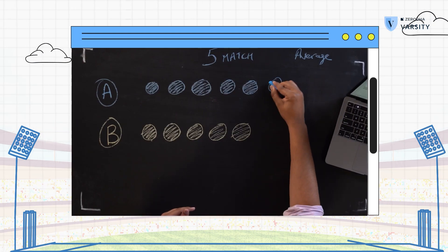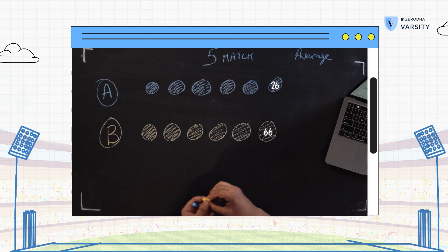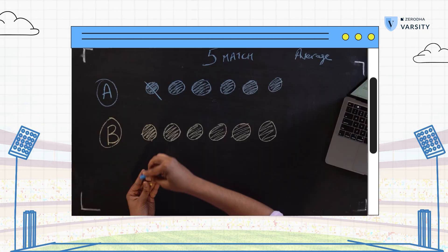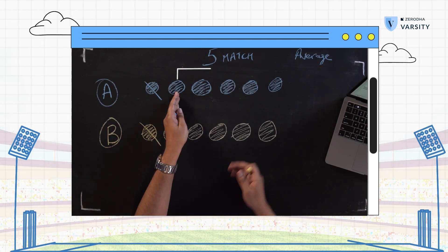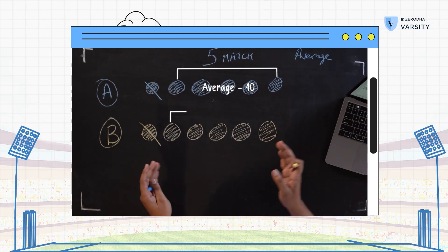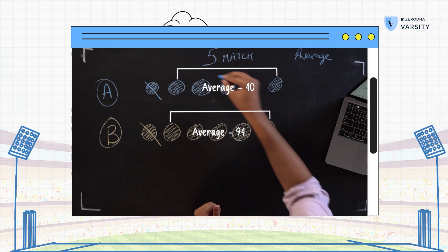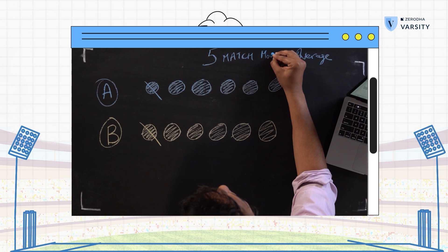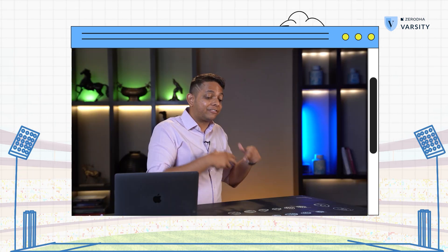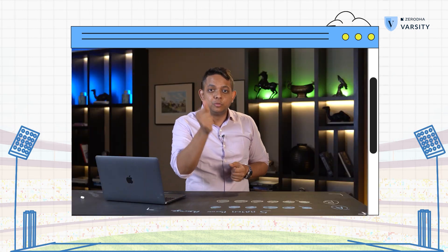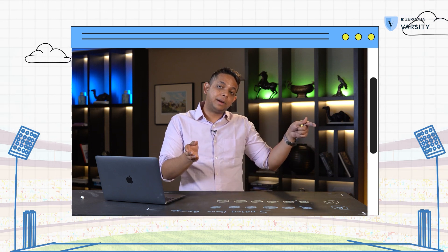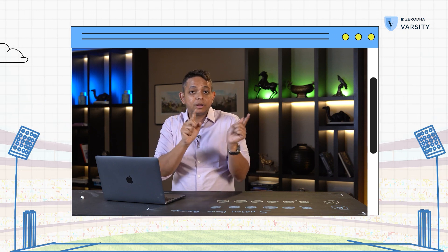What if we have a sixth match? Since we're only doing five matches, instead of seeing the first five, we will drop the first match for both batsmen and only take the second match through the sixth match. This time, the average for batsman A is 40, and average for batsman B is 94. Therefore, this is a five match moving average. These batsmen will keep playing and we have to continuously calculate their five match moving average — the word here is moving. We find the average for a period, drop the last number, add the next number, and keep moving. That's why it's called a moving average.